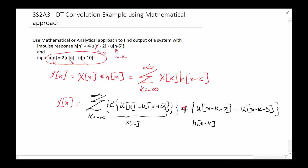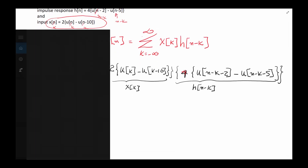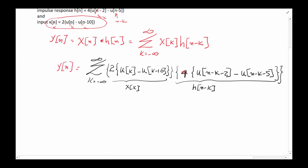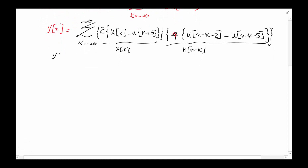So far nothing fancy — all we're doing is replacing a parameter with something new. This is our h of n minus k. Let's carry this forward. y of n is going to involve a couple of summations: this multiplied by all of that in one summation, and this multiplied by the rest in another. The constants two and four can be pulled out, giving eight times the summation of k from minus infinity to infinity of u of k times u of n minus k minus two minus u of n minus k minus five.